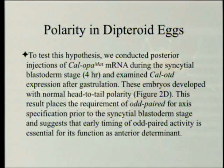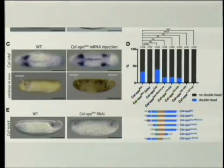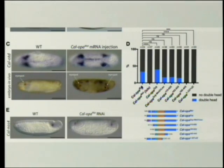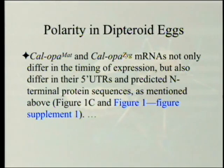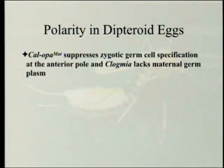At this point we're only dealing with one particular fly. Several different chemicals were used, and some did not give double-tailed embryos while others did. CalOpa-maternal and CalOpa-zygote mRNAs not only differ in timing of expression, but also differ in their five-prime UTRs and predicted N-terminal protein sequences.